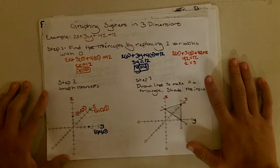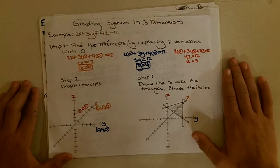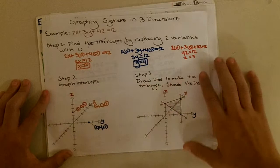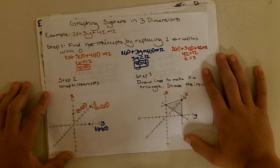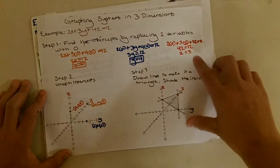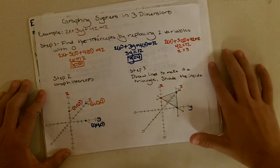Graphing systems in three dimensions: the example is 2x plus 3y plus 4z equals 12. Step 1 is to find the intercepts by replacing two variables with 0. Setting y and z to 0 gives 2x equals 12, so the x-intercept is 6. Setting x and z to 0 gives 3y equals 12, so y equals 4. Setting x and y to 0 gives 4z equals 12, so z equals 3.